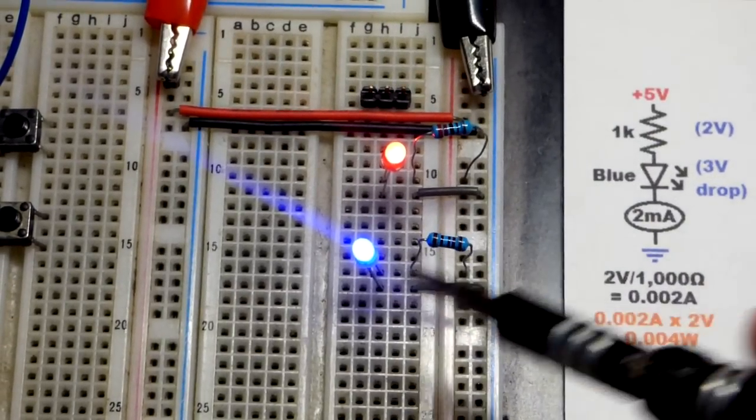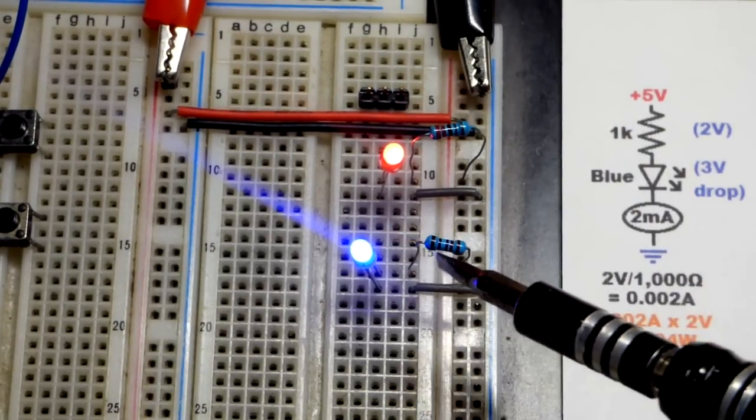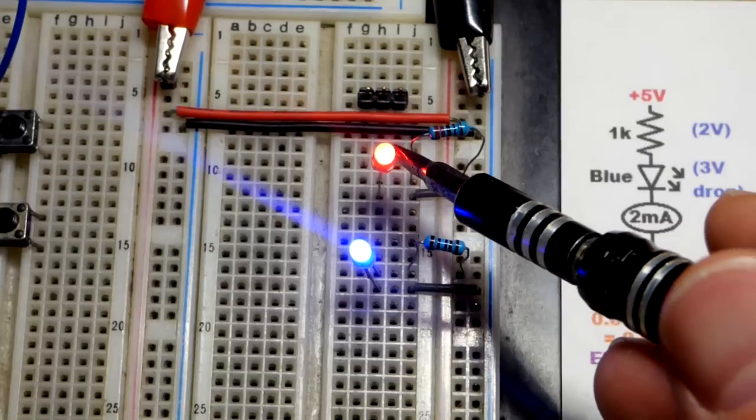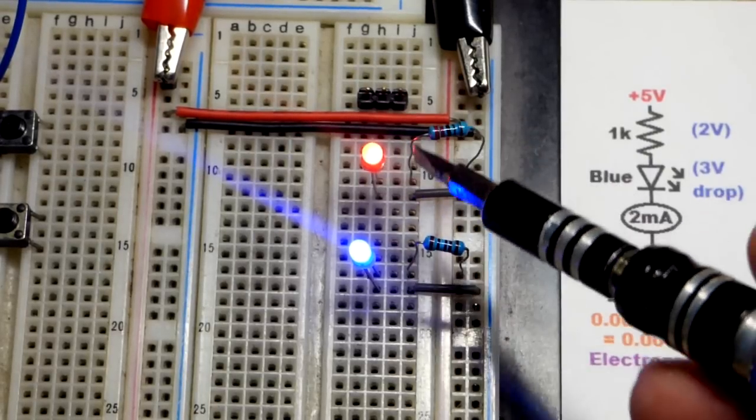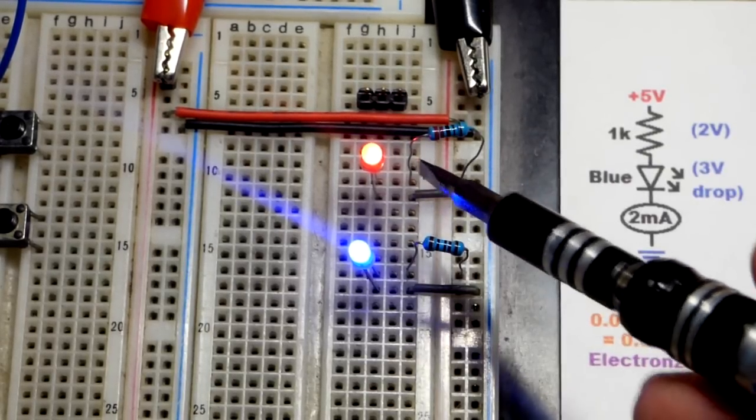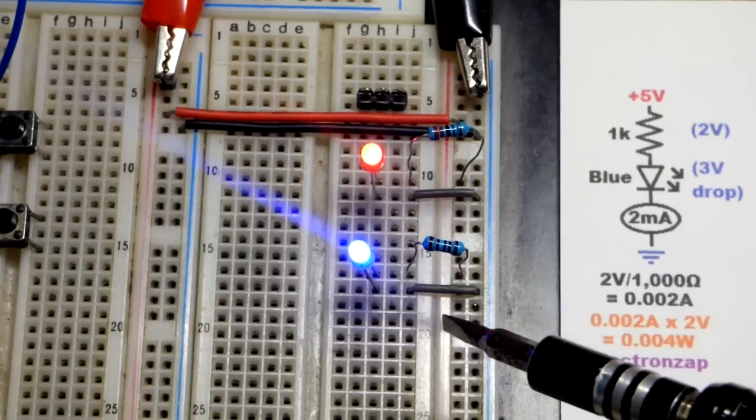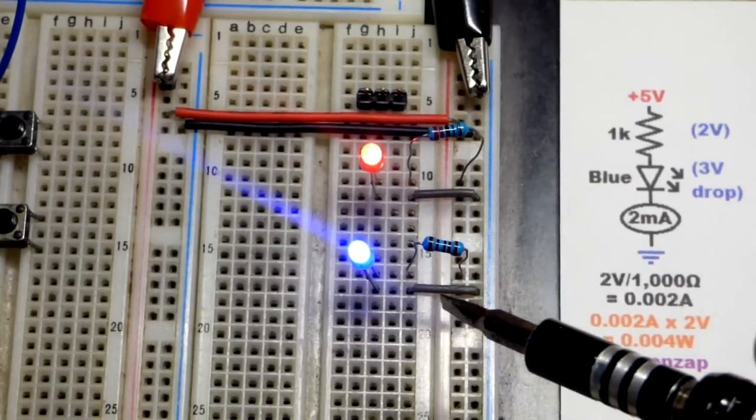That is a 1,000 ohm resistor right there, limiting current through that blue LED. Red LEDs aren't as bright, so I had to use a lower value resistor there, 220, to get somewhat close to the same brightness level right there, as I mentioned before.